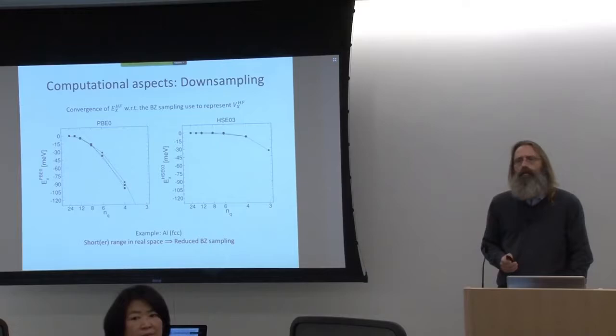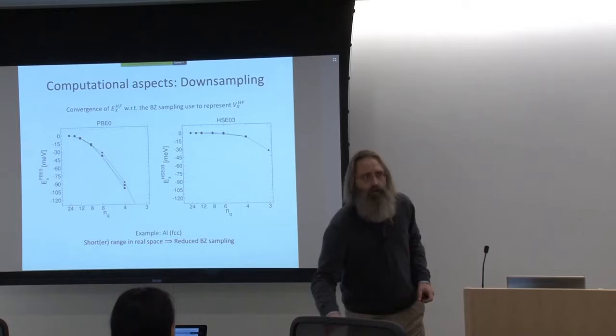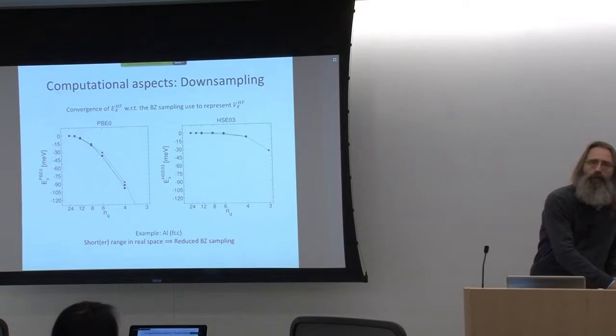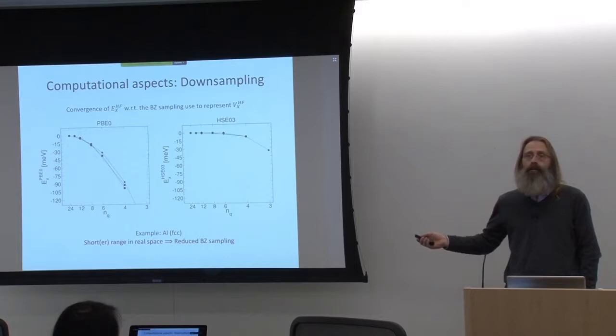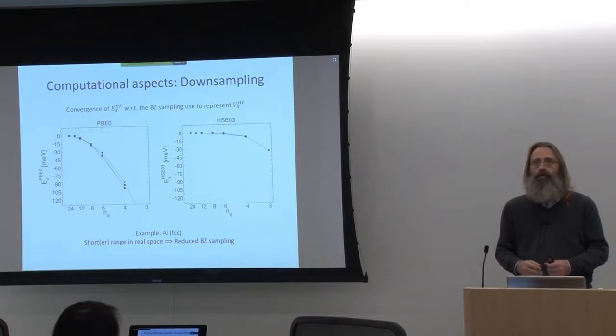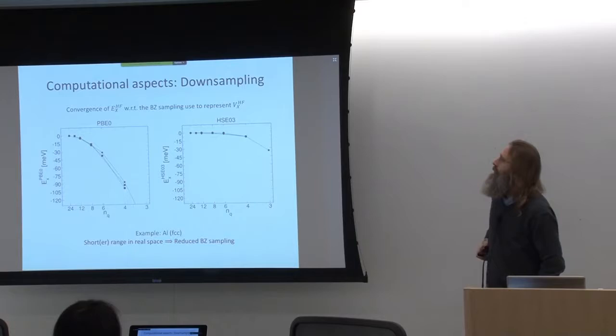If you do Hartree-Fock with Gaussians without exploiting locality, it would scale as N to the power of 4. But in all practical implementations with local basis sets, you can get the scaling down below cubic, because you can exploit the fact that your basis functions only overlap with ones that are close by.